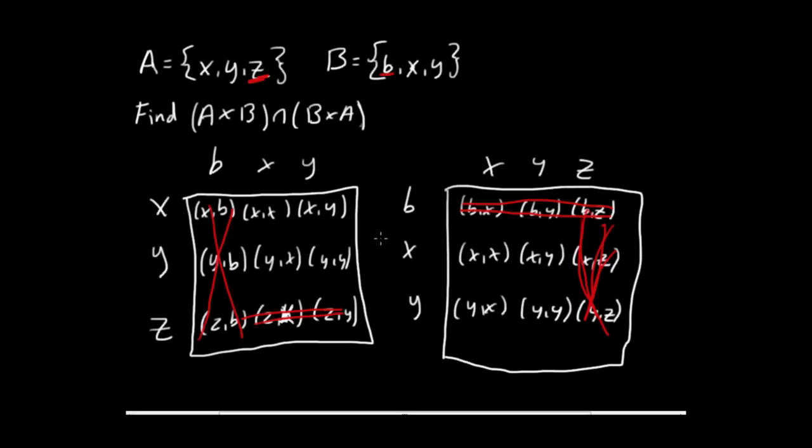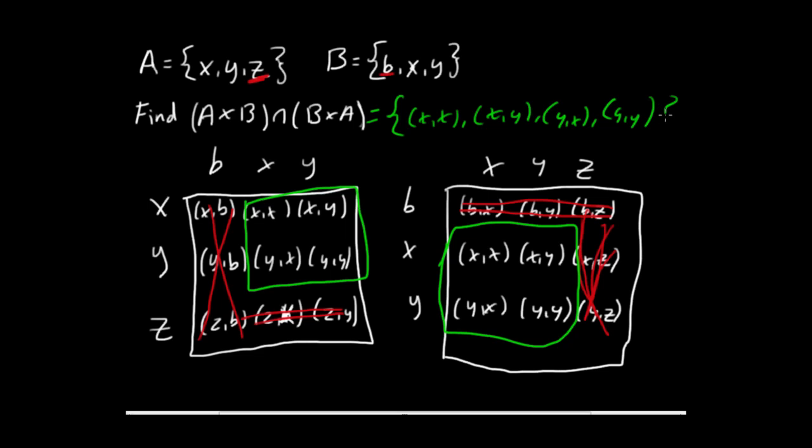And so that leaves you with only four elements, which are all shared elements. You can see, obviously, (X,X) and (Y,Y) are the most obvious, but you have (X,Y) and (Y,X). And then your solution here is going to be (X,X), (X,Y), (Y,X), and (Y,Y). And that is the intersection of these two Cartesian products.